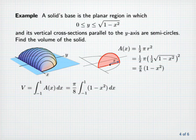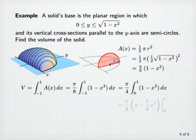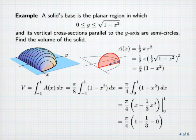Again, we'll use symmetry to rewrite the integral from minus one to one as two times the integral from zero to one. We anti-differentiate and evaluate between zero and one, and this gives us pi over four times one minus one-third minus zero, or pi over four times two-thirds, which is pi over six.